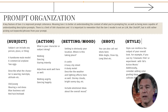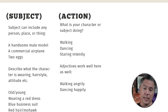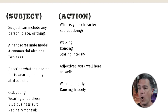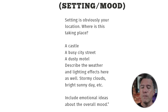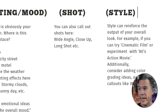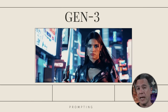I don't necessarily think keyword prompting is better than descriptive prompting, but I do think there are certain buckets you should probably hit to maximize your generation. First is your subject — your person, place, or thing, whatever we're focusing on in the shot. Second is the action that thing is taking: is it walking, dancing, staring intently? Adjectives work well here, like 'angrily walking' or 'dancing happily.' Setting refers to your location: a castle, a busy city street, or a dusty motel. Shot refers to things like wide angle, close up, and long shot. I have a list of shot terms available in a free PDF over on Gumroad — just put zero in the cost field to download it.